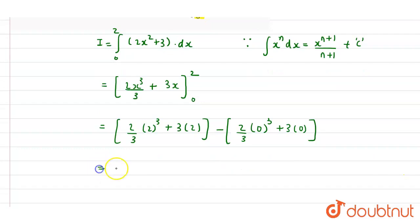Now the value will come as 2 by 3 into 8 plus 6 and here it will be 0, so minus 0. So the value will be 16 by 3 plus 6. Now take the LCM, so LCM will be 3. Here it will come 16 plus 3 into 6, it will be 18.